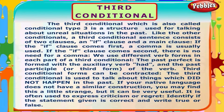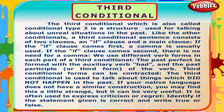We use different verb forms in each part of a third conditional. The past perfect is formed with the auxiliary verb 'had' and the past participle, or third form, of the verb.